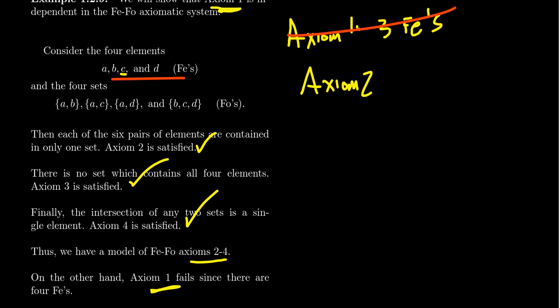To prove that axiom two is independent, construct a model where axioms one, three, and four are true but axiom two is false. To show axiom three is independent, construct a model where axioms one, two, and four are true but axiom three is false. A similar approach works for axiom four. But I'll leave those as exercises for the viewer.